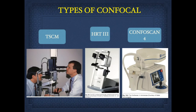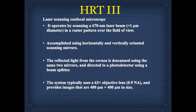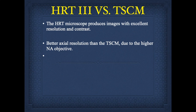The types of confocal are TSCM, HRT3, and CONFOSCAN4. TSCM means Tandem Scanning Confocal Microscopy — in vivo imaging was accomplished from this design, although it is not commercially available. HRT3 is a laser scanning confocal microscope. The major difference between HRT3 and TSCM is that the HRT microscope produces images with excellent resolution and contrast, hence better resolution than the TSCM.